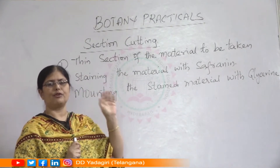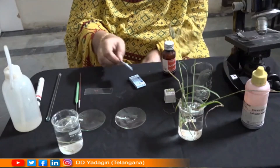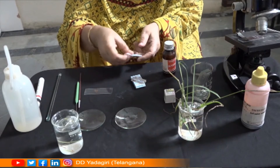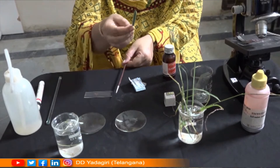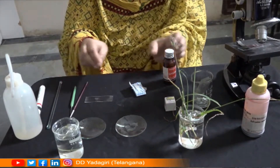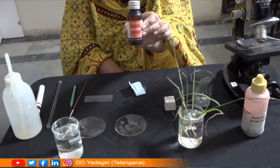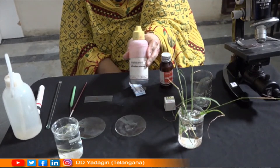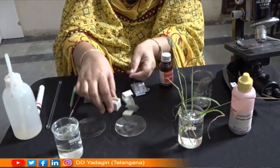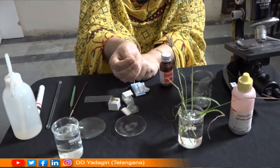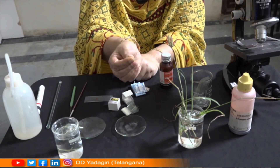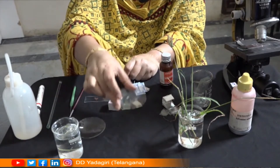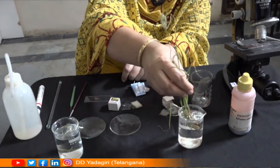Now let us see what equipment is required for section cutting. The materials required are: a blade for cutting sections, a brush, a needle, glycerin, saffronin for staining, coverslips for making a temporary slide, watch glasses, and the given material which is a monocot plant — grass.